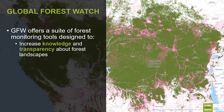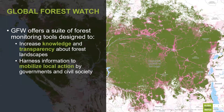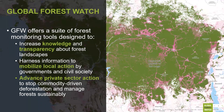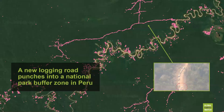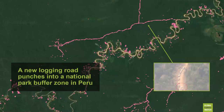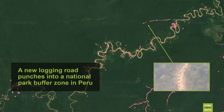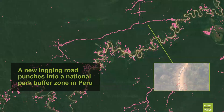Global Forest Watch offers an integrated, openly accessible suite of tools designed to enable experts and non-experts alike to access information about forest change and mobilize action. This includes increasing knowledge and transparency about forest landscapes — GFW tools and data offer access to the state of the world's forests to everyone everywhere for free. We also harness information to mobilize local action by governments and civil society, and advance private sector action to stop commodity-driven deforestation. One of our tools, GFW Pro, allows the private sector to measure risk associated with their supply chains. An example on the platform shows the near real-time GLAD deforestation alerts visualizing a new logging road entering a national park buffer zone in Peru.